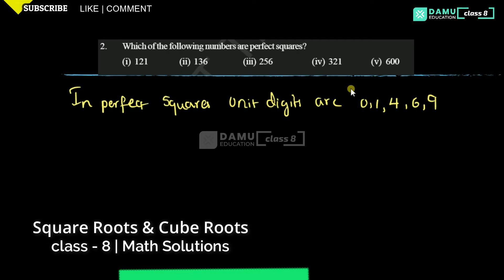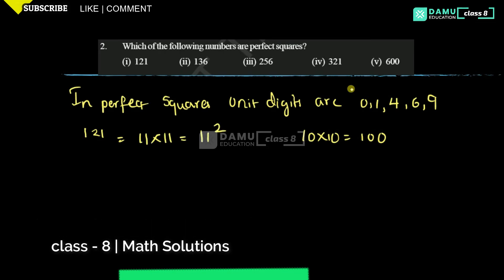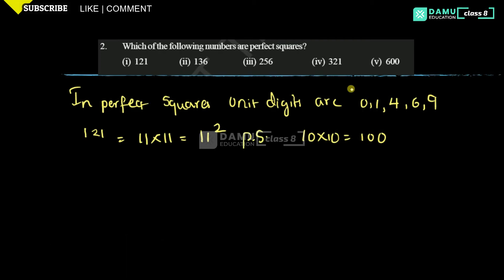Our first one is 121. We know 10 into 10 = 100, so after 100 only we will get — 121 can be written as 11 into 11. So 11 squared = 121. Yes, it is a perfect square number.